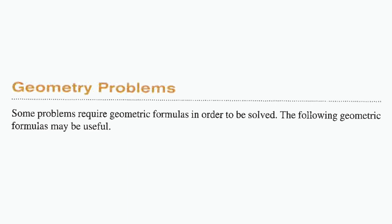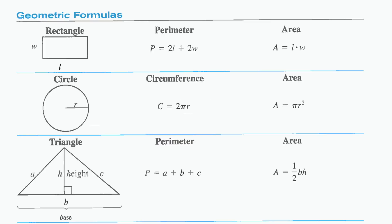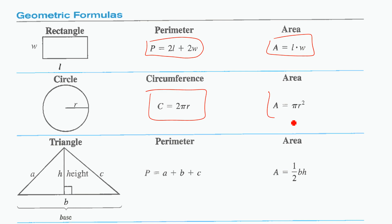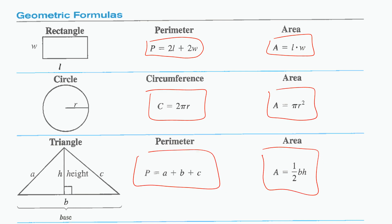The second section covers geometry problems. Quick review of formulas: for a rectangle, perimeter and area; for a circle, circumference and area; for a triangle, perimeter and area. Take a few minutes to get those down if you need a quick review.